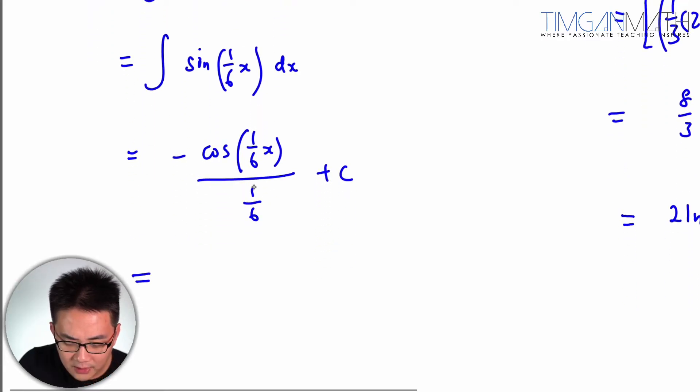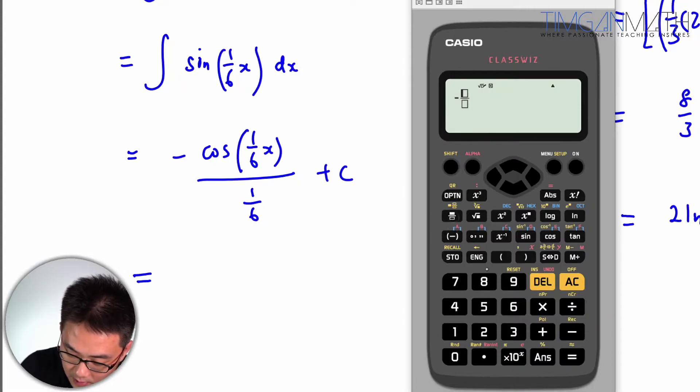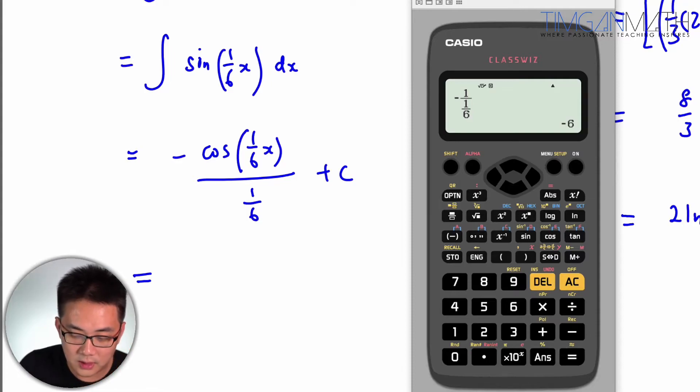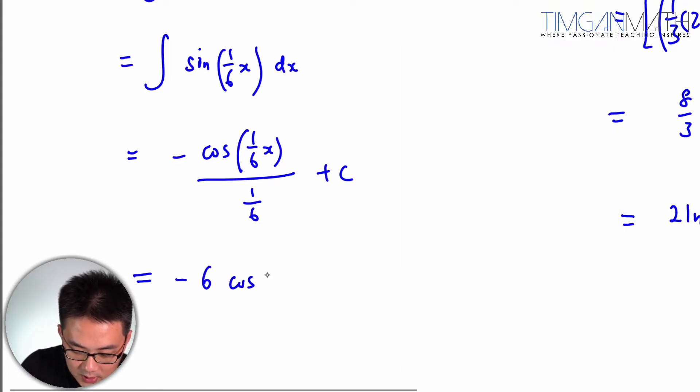Okay, this is negative 1, 1 over, so this is negative 1, 1 over 6. Okay, it's actually just negative 6 here. So it's negative 6 cosine 1/6 x plus c.